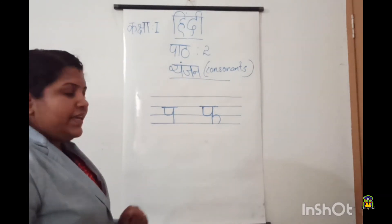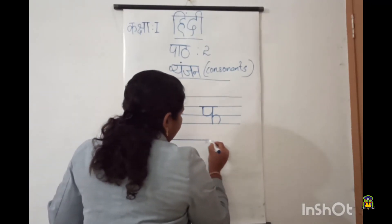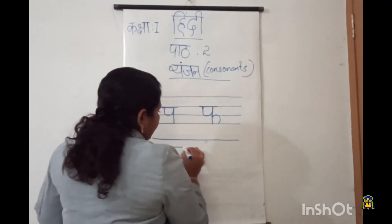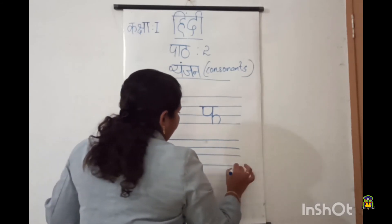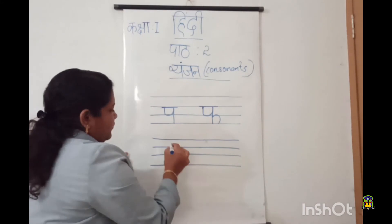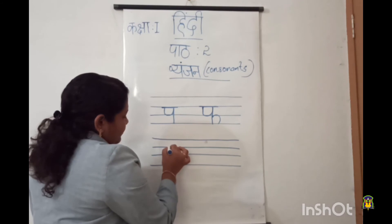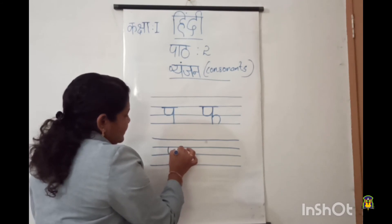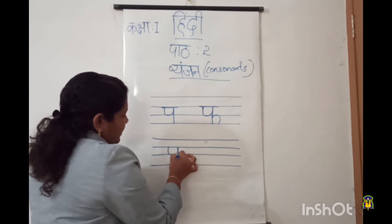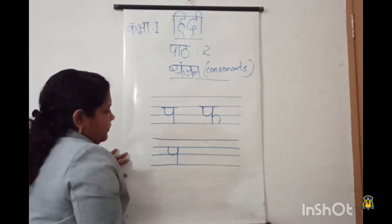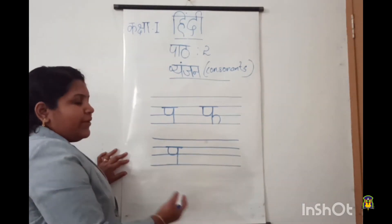Shall we write these letters one more time? Yes! So let me draw the lines first — one, two, three, four. Okay. Keep your pencil on the second line. In between the second line and third line, we will draw a curve like this. Then from here we will draw a standing line from second line to fourth line. Then we will draw a sleeping line on the top of the second line. So again, that's pa.